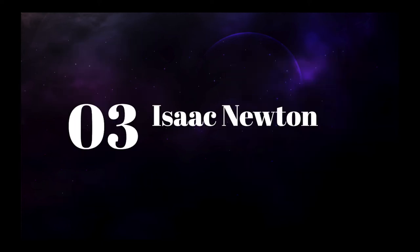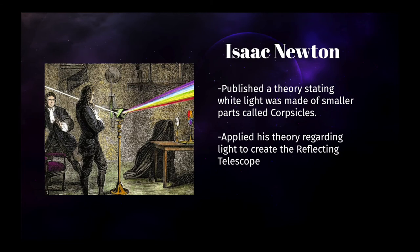Part three: Isaac Newton. Between the times of Galileo and now, there was really only one great alteration that was made to the telescope. That alteration was made by Sir Isaac Newton in 1668 when he created the reflecting telescope.